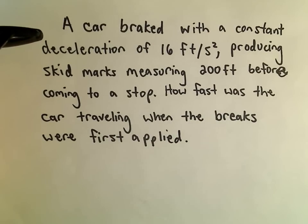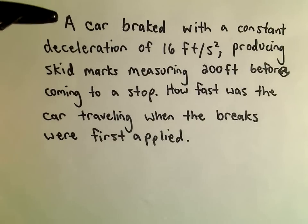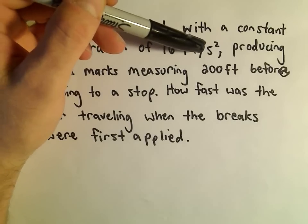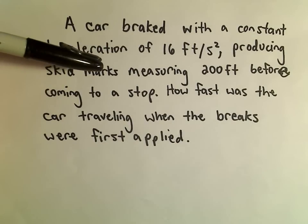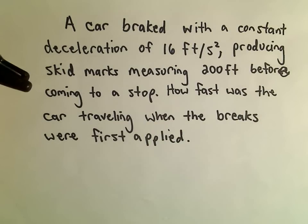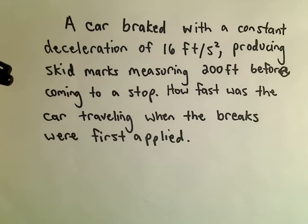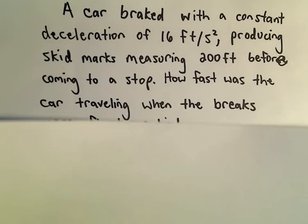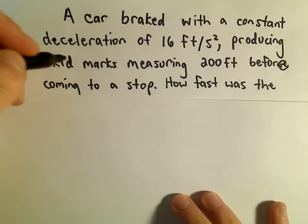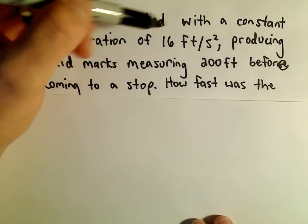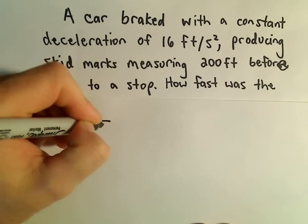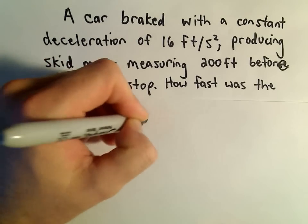We've got a person that slams on the brakes. They braked with a constant deceleration of 16 feet per second squared, and that produced skid marks measuring 200 feet before they finally came to a stop. We want to figure out how fast the car was traveling when the brakes were first applied. The deceleration was constant at 16 feet per second squared, so I can simply say the acceleration at any time t is going to be negative 16 — the negative because it's decelerating.